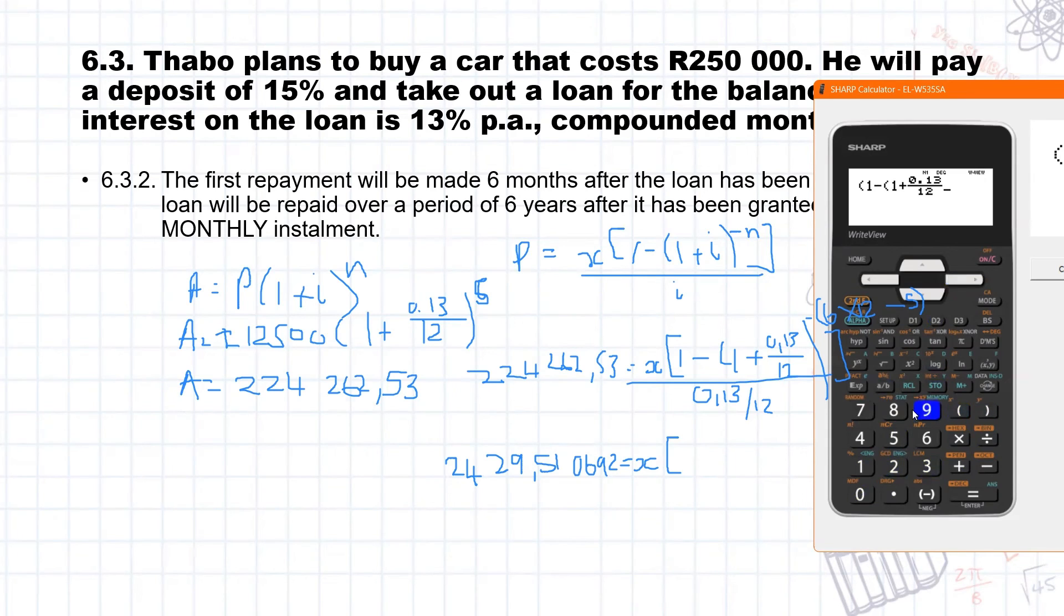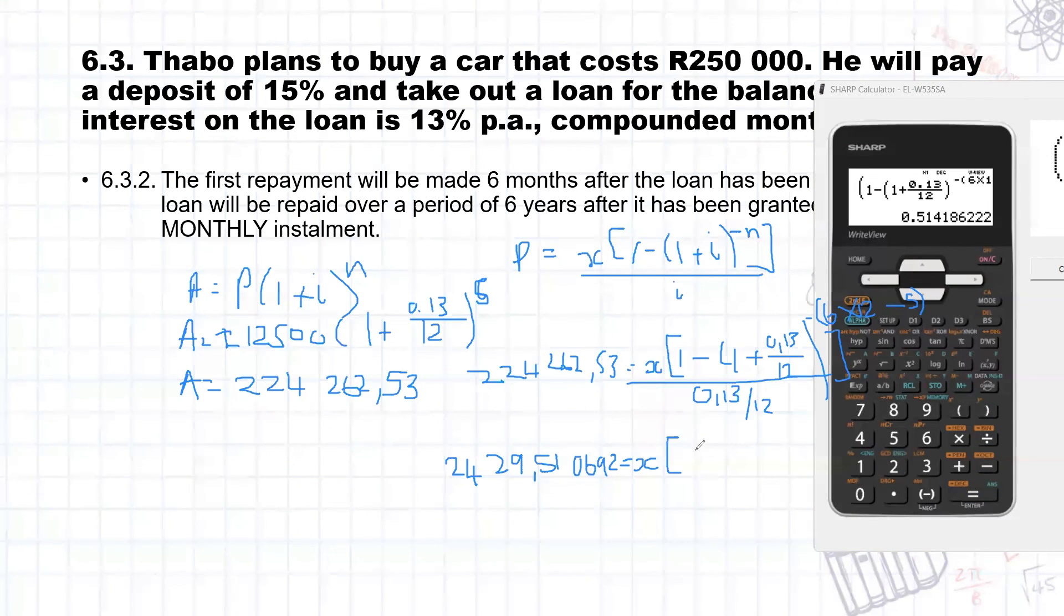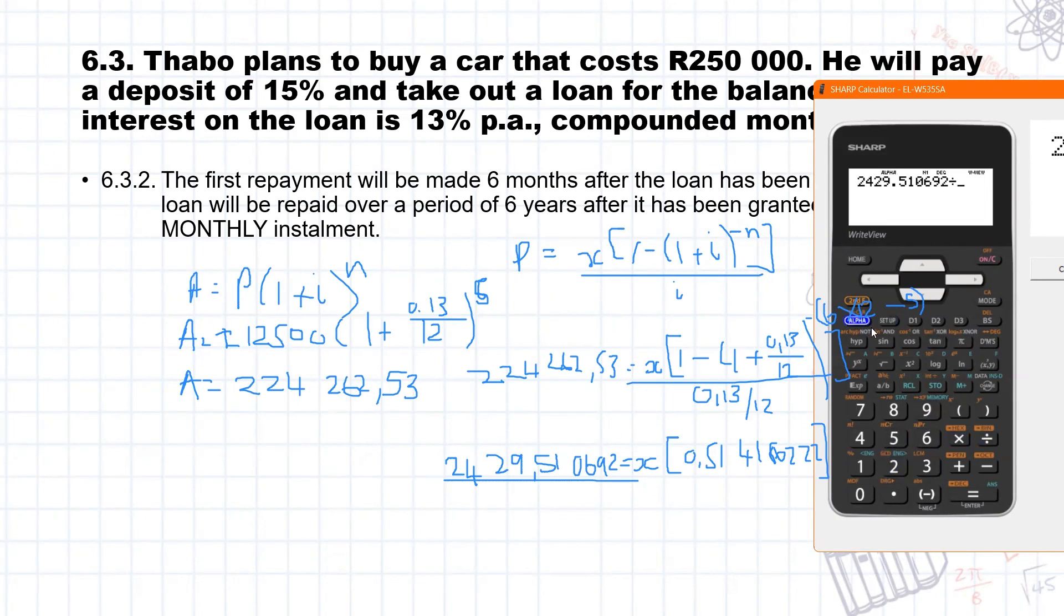And I'll just chuck this part into the calculator as well. And that will give us an answer of open brackets, one minus open brackets again, one plus 0.13 over 12. Right arrow to get out of your fraction, close your bracket to the power of, now remember to use a negative button and not the minus, otherwise you're going to get an error. And then brackets six times 12 minus five, close your brackets, press your right arrow and close the brackets again. And that will give us 0.514186222. Now we want X by itself, so we're going to divide this by this one here. So I'm going to type in 2,429.051069 divided by alpha and answer.